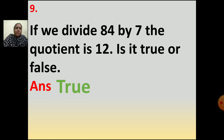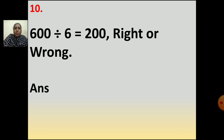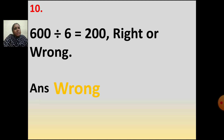Now the tenth question: 600 divided by 6 is equal to 200 — right or wrong? Calculate and tell me. It is wrong. The correct answer is 100, not 200. So the answer is wrong.